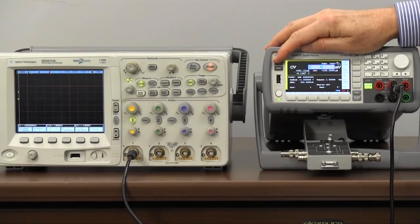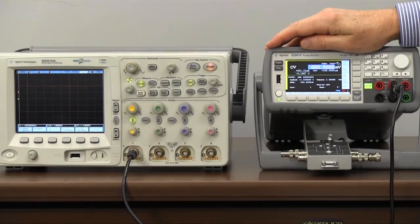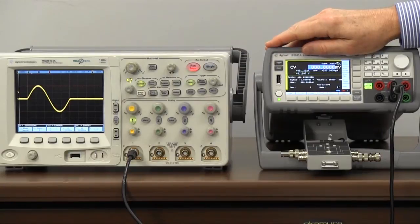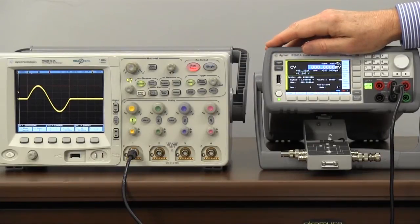So now we've got the output of the B2961A connected up to our oscilloscope. I'm going to push the trigger button and you can see that we've generated one period of a sine wave.